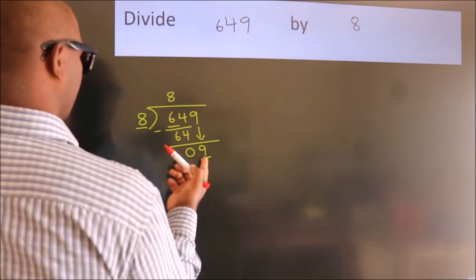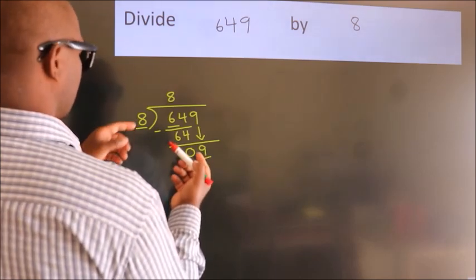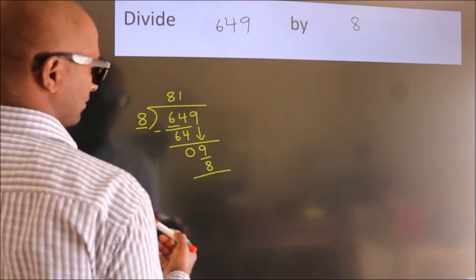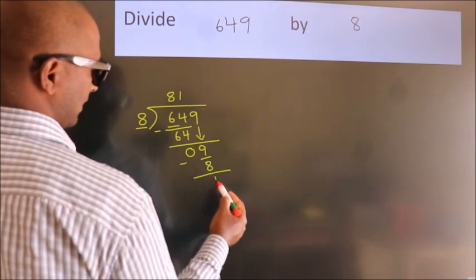A number close to 9 in the 8 table is 8 times 1 equals 8. Now we subtract and get 1.